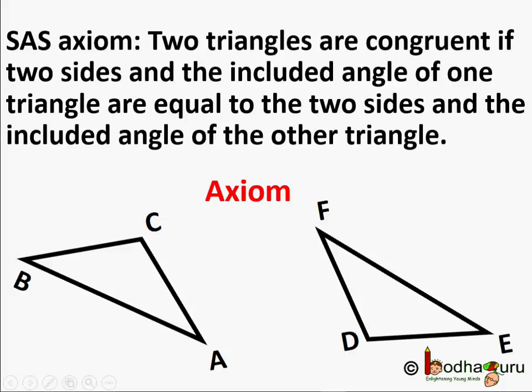So, if two sides and the included angle of one triangle are equal to the two sides and the included angle of the other triangle, we can declare the two triangles are congruent following SAS axiom. Other criteria for congruence can be easily proved using this axiom.